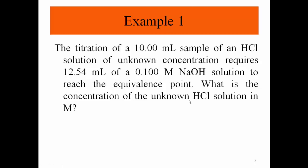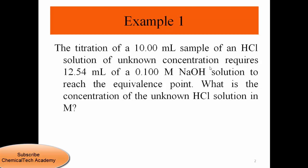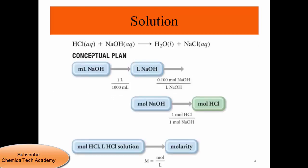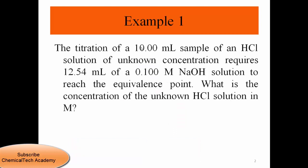We have a base with one OH and an acid with one H, so to reach the equivalence point the number of moles of acid must equal the number of moles of base. Given: 12.54 mL of NaOH at 0.1 molar, and 10 mL of HCl. The reaction is: HCl + NaOH → H₂O (l) + NaCl (aq).